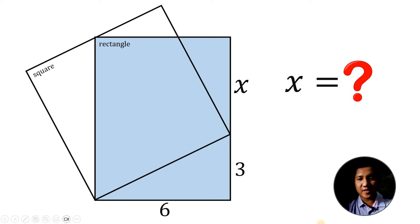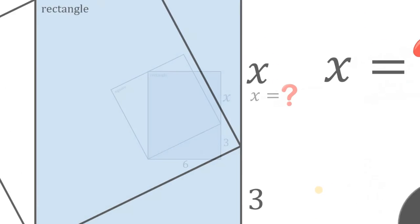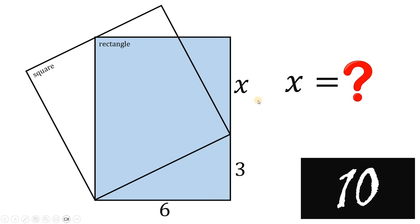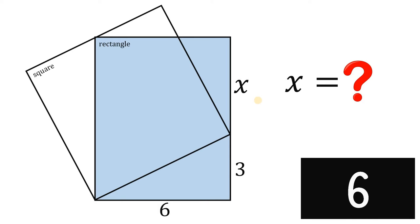Can you solve this geometry challenge? Here's the question. Given this rectangle and a square tilted such that the length of this rectangle is divided into x and 3, and the width of this rectangle is 6, our goal is to solve for the value of x. You can pause this video if you want to give this problem a try.